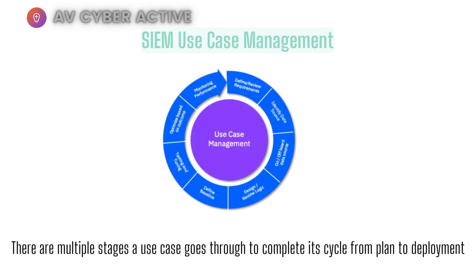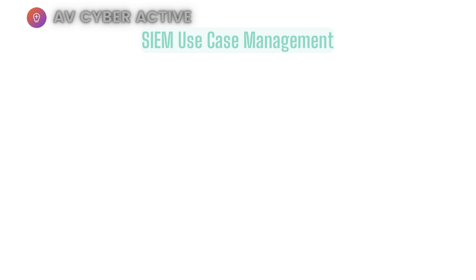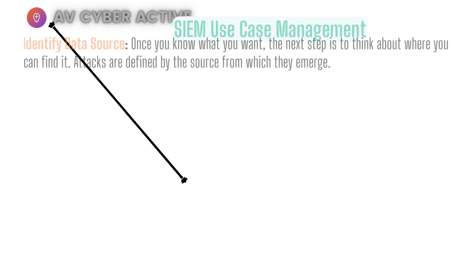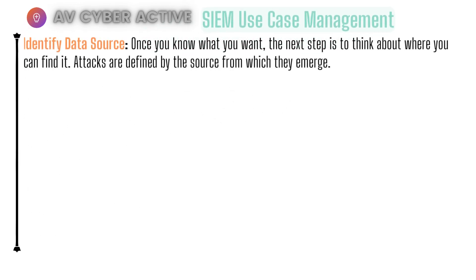There are multiple stages a use case goes through to complete its cycle, from planning to deployment. The first stage is to identify your data source — Windows, Linux, or IoT devices, as the case may be. Once you know what you want, the next step is to think about where you can find it. Attacks are defined by your source from which they emerge, for example your base events or syslog.